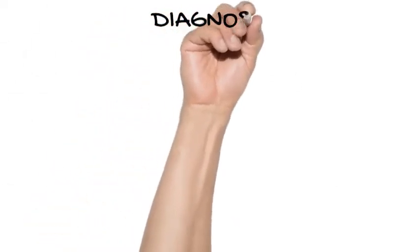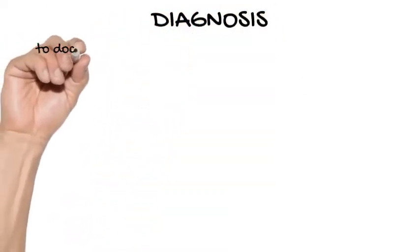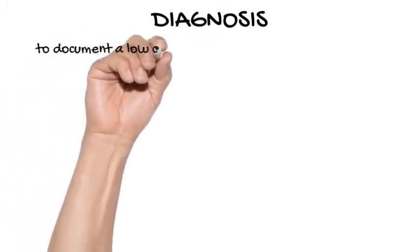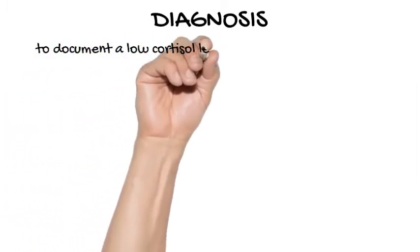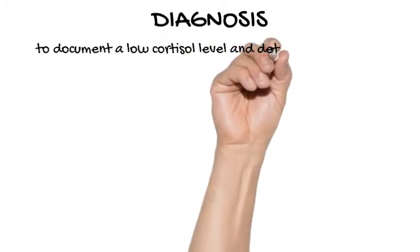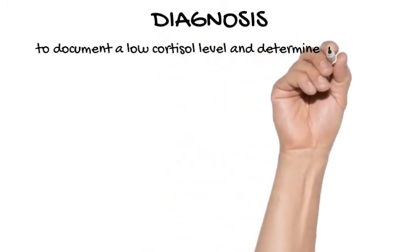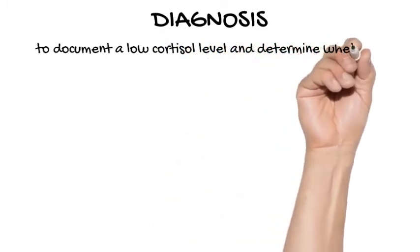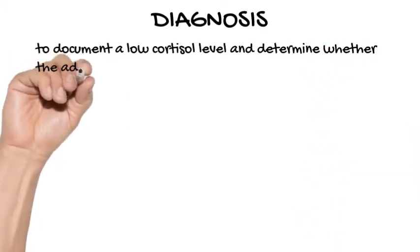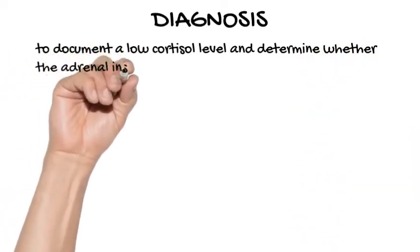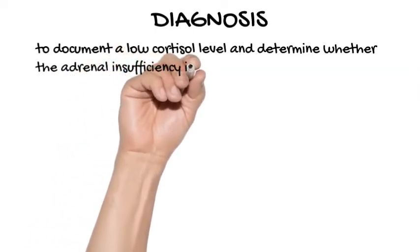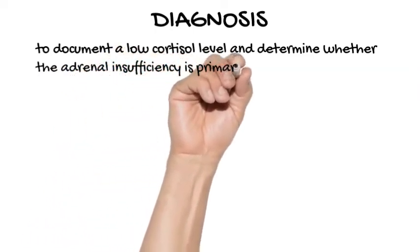Diagnosis - Metabolic Tests: The goal of laboratory testing is to document a low cortisol level and determine whether the adrenal insufficiency is primary or secondary. Low serum cortisol levels at 8 AM of less than three micrograms per deciliter suggest adrenal insufficiency, as do low serum sodium and high serum potassium levels.